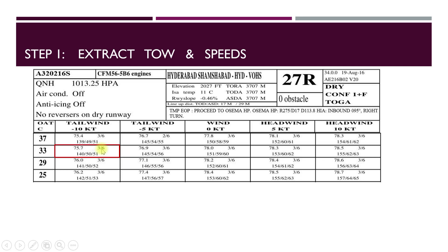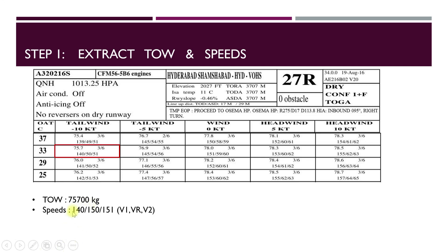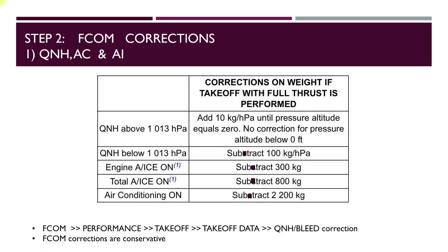The limitation codes 3/6 — the decode for 3 and 6 is mentioned at the bottom of the chart, you can have a look. We note down the weight and the V speeds, as these are not final and will need to be corrected as per the given conditions in our example. The takeoff weight is 75,700 kg and the V speeds are 140, 150 and 151.